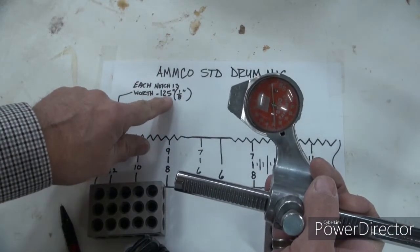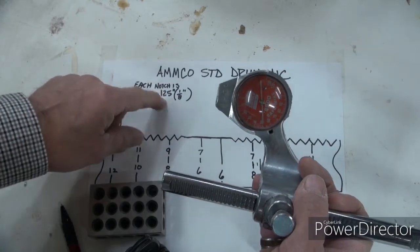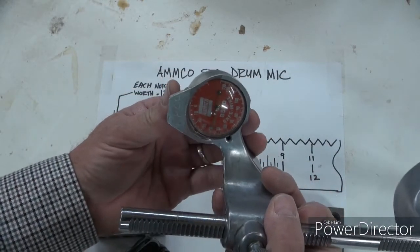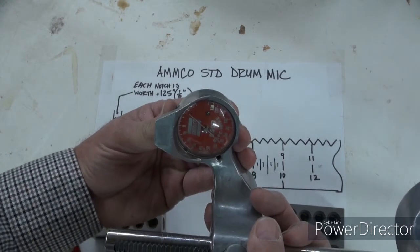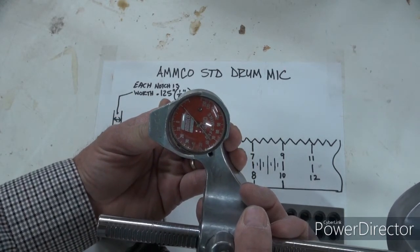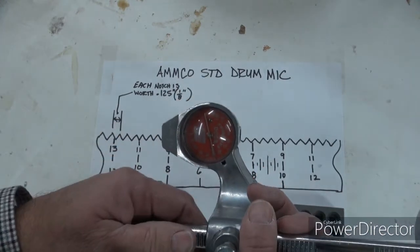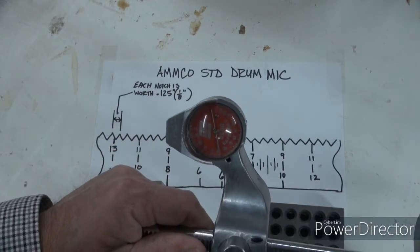So wherever I have this set at, count my notches, and if this plunger comes out from the zero I add to it. If it goes inward I subtract from it.